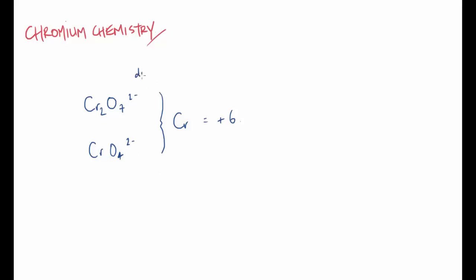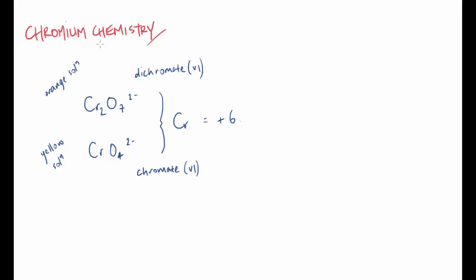Because of the +6 oxidation state, you'd often see dichromate written as dichromate(VI), and chromate written as chromate(VI). In terms of colours, the dichromate ion is an orange solution - very bright orange - while the chromate ion is a yellow solution, almost fluorescent yellow. The colour is very intense. States are very important: say precipitate if it's a precipitate, solution if it's a solution.